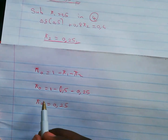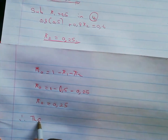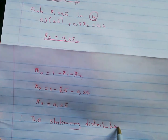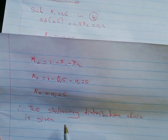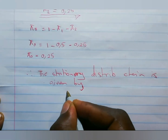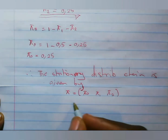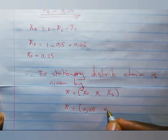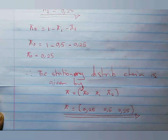We now have all values. Therefore, the stationary distribution of this Markov chain is π = [π₀, π₁, π₂] = [0.25, 0.5, 0.25]. This is the stationary distribution of that Markov chain. Thank you for watching — don't forget to subscribe, like, and share!